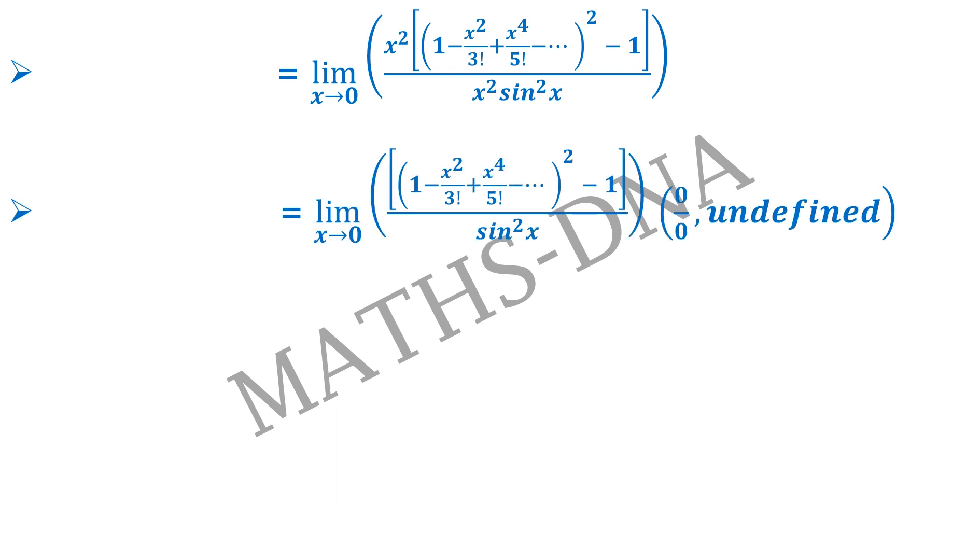Moving on further, we eliminate the x square from the numerator and denominator. So we get limit x tends to 0, 1 minus x square upon 3 factorial plus x raise to 4 upon 5 factorial whole square minus 1 upon sin square x, which is again 0 upon 0, that is undefined form.